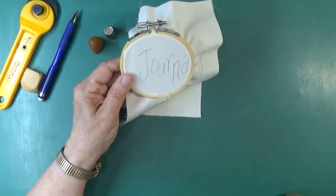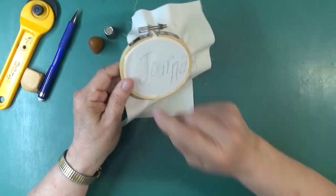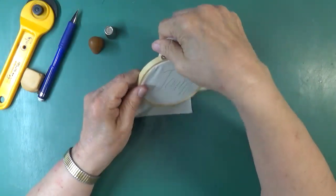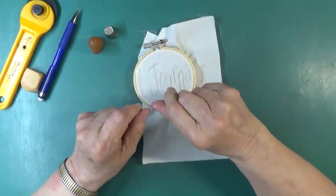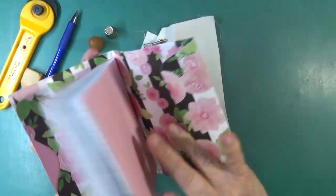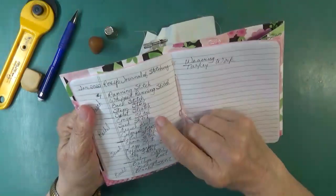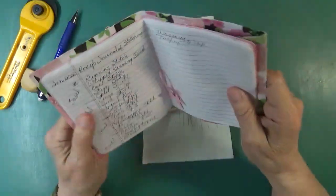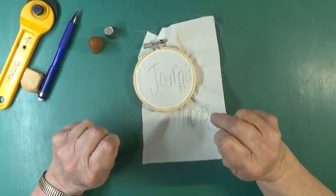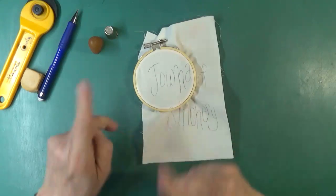And I haven't decided whether I want to do a backstitch here or whether I want to do, I could even do a couching. I don't think I'll do a couching stitch. I think probably a stem stitch. I may do a stem stitch. So, let me gather my supplies. Decide what colors I'm going to use. And I will be back.